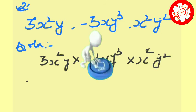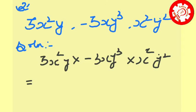So first step: multiply the signs. Plus into minus is minus. Then constants: 3 times 3 is 9.